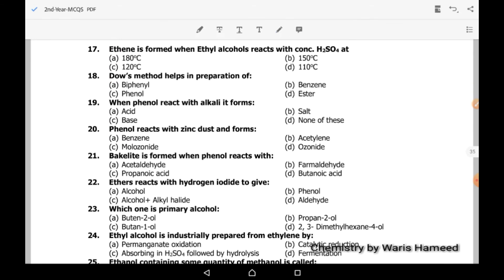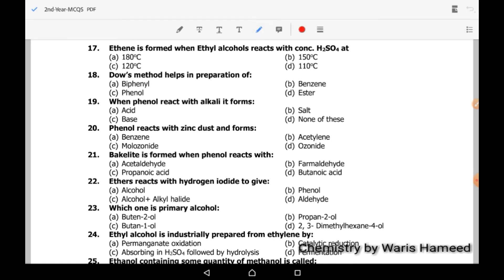Dow's method helps in preparation of benzene. When phenol reacts with alkali, it forms salt. Phenol reacts with zinc dust and forms benzene ring. Bakelite is formed when phenol reacts with formaldehyde.